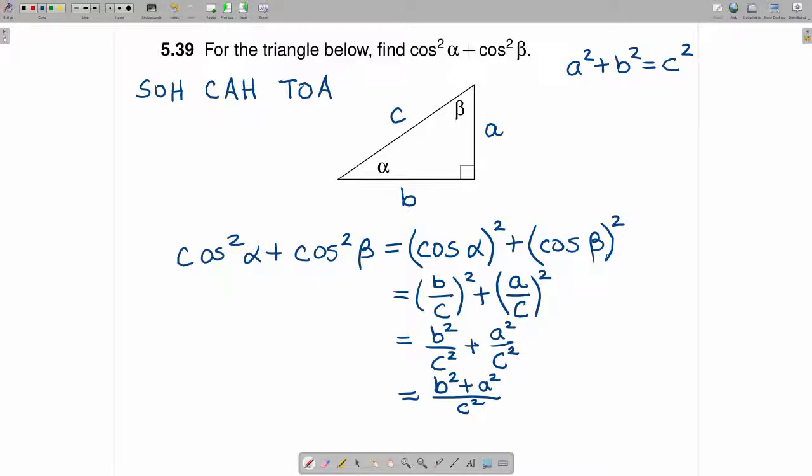That is to say, we can replace our numerator, which is B squared plus A squared, with C squared. So this becomes C squared divided by C squared, and C squared divided by C squared is equal to 1.